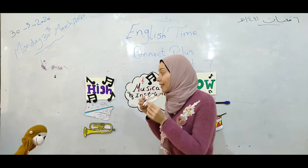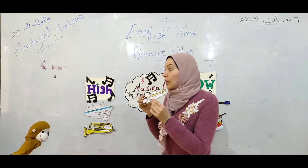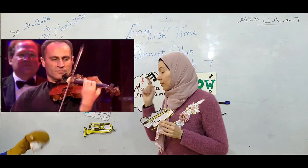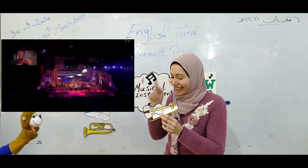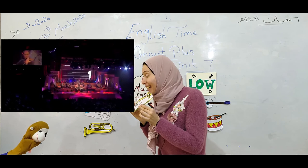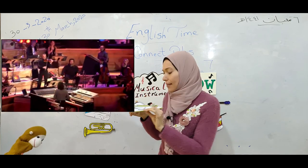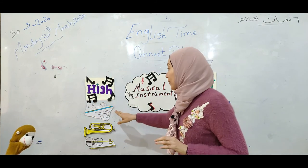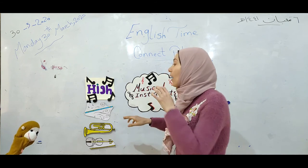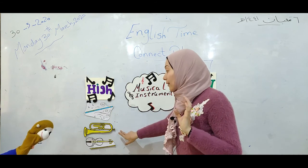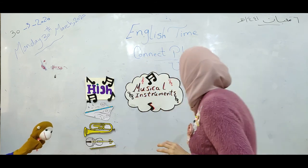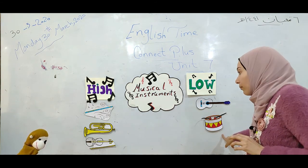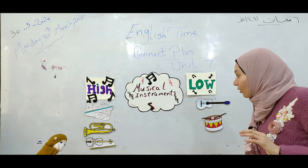The violin. The last one is the violin. Let's listen together to the violin. Are you listening? It's high, it's very very high. It makes a very high sound. So we have three musical instruments that make high sounds: the flute, the trumpet, and the violin. And two musical instruments that make low sounds: the guitar and the drum.